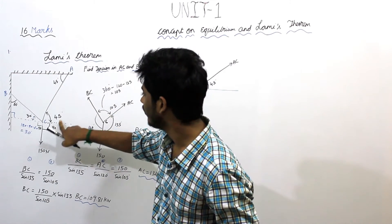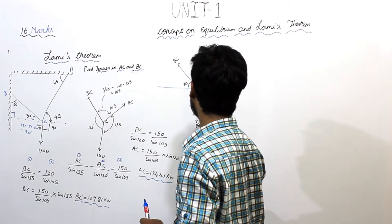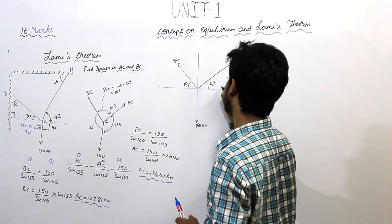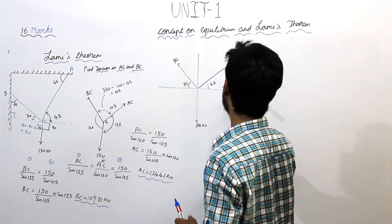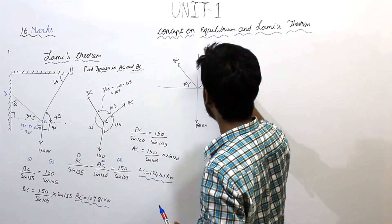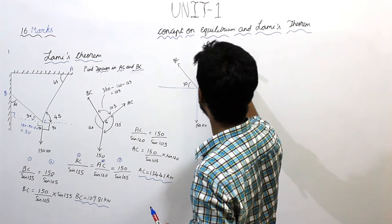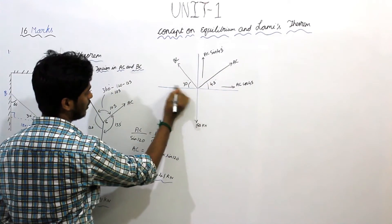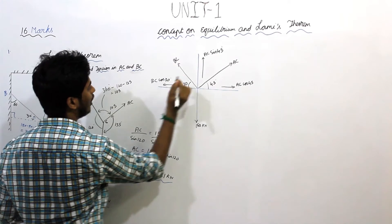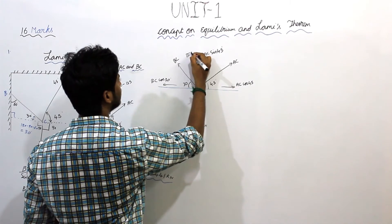AC makes an angle of 45 degrees with respect to the x-axis, and the weight is 150 Newtons. In the free body diagram, AC has components: AC cos 45 along horizontal and AC sin 45 along vertical. BC makes an angle of 30 degrees to the x-axis, giving components BC cos 30 and BC sin 30.